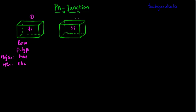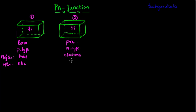Now let us take the second material and assume it is uniformly doped with pentavalent or donor dopants — in this case, phosphorus. This makes this piece of semiconductor material N-type, where the majority carriers are electrons and minority carriers are holes.